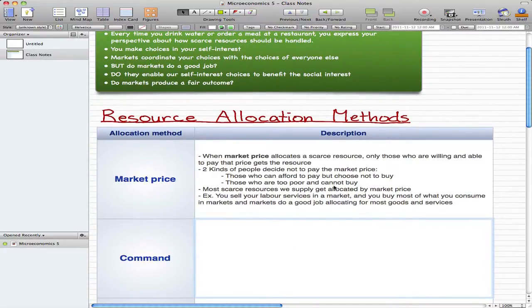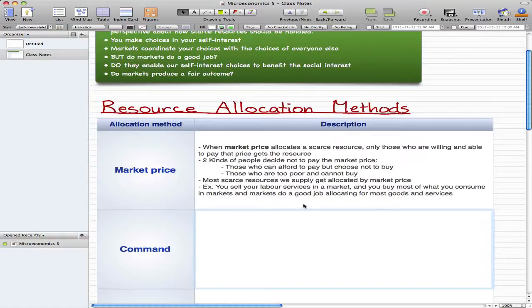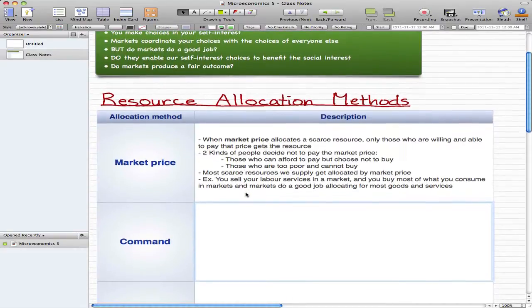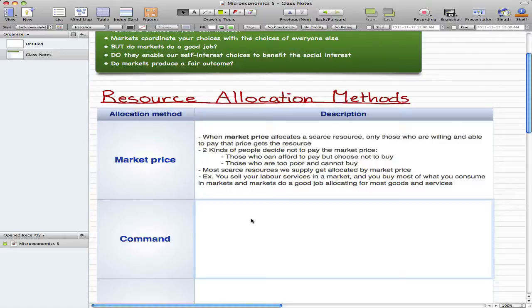Most scarce resources we supply get allocated by market price: computers, food, pretty much most of what you can think of. For example, you sell your labor services in a market, and you buy most of what you consume in markets. What you need to know is that usually markets do a good job allocating most goods and services.